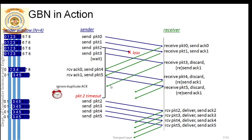ACK 1 is resent, which means the receiver has not correctly received all the packets. If he is sending ACK 1 correctly, that means all the packets before packet 1 - only packet 0 was sent before packet 1 - so both packet 0 and packet 1 must be correctly received. That is why ACK 1 acts as a cumulative acknowledgement for both packet 0 and packet 1.